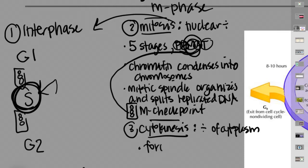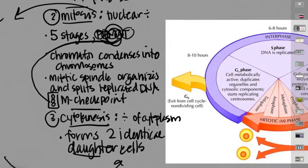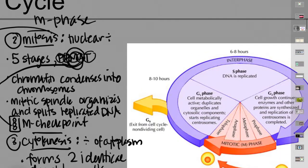Cytokinesis forms two identical cells, which we call daughter cells. The life cycle of a cell involves the cell doing its normal function and then eventually becoming two cells. Some cells don't ever actively divide — as the cell progresses through interphase it goes off into what's called G0, and many cells never divide.